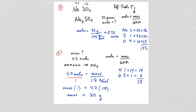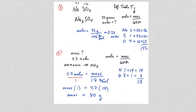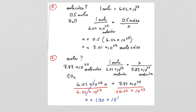Questions 5 and 6 are also one-step mole problems but now using moles = 6.02 × 10²³. Set up a proportion: 1 mole over 6.02 × 10²³ molecules equals x moles over the given number. For question 5, half a mole gives half the molecules. For question 6, you're given molecules and solving for moles — cross multiply and divide. The answer is 13 moles.